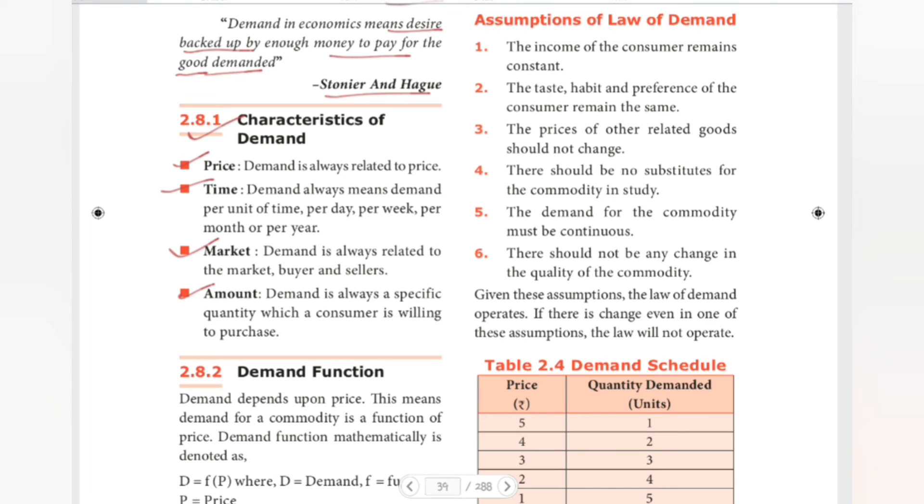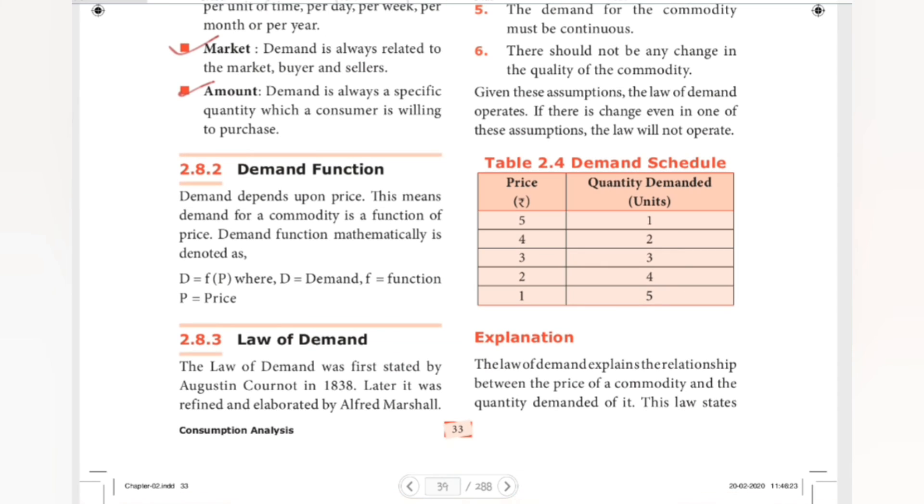It is an inverse relationship. Next, we have demand function. Demand depends upon price. This means demand for a commodity is a function of price. Demand function mathematically is denoted as D = f(P). So that is, demand is equal to function of price, where D is equal to demand, f is equal to function, and P is equal to price. So demand function - demand is decided upon price. That is the demand function.